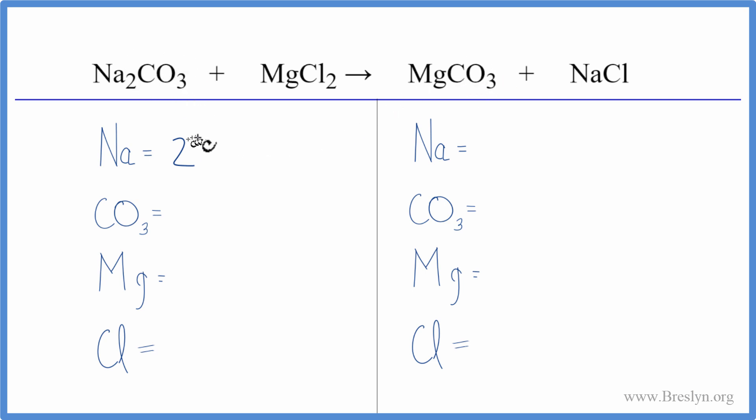here. It's a polyatomic ion, so when we have these double displacement reactions it's often very helpful just to count this as one item. So we have one carbonate, one magnesium, and then two chlorine atoms.